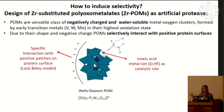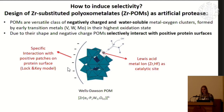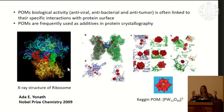We based our design on previous work showing that polyoxometalates have a tendency to bind to specific protein regions. The most famous example is the X-ray structure of the ribosome, for which Ada Yonath co-shared a Nobel Prize in 2009. She was able to crystallize ribosomes — very complex, large, difficult-to-crystallize molecules — by adding polyoxometalates, which targeted flexible, positively charged parts of the ribosome, rigidifying them. The resulting crystal structure includes these metal-oxo clusters, confirming their selective binding to protein surfaces.